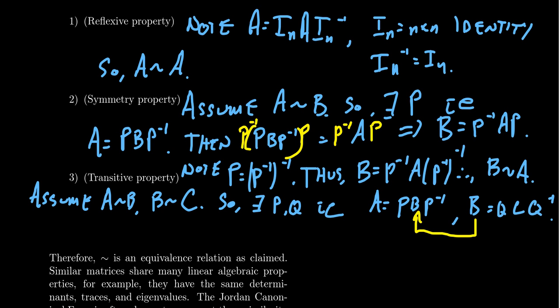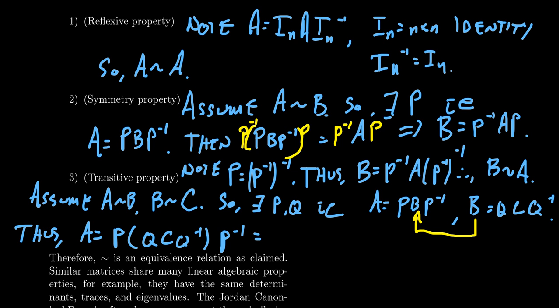Thus, we're going to get that A equals P times Q C Q inverse times P inverse. And so by the associative property, this will equal P Q times C times Q inverse P inverse.